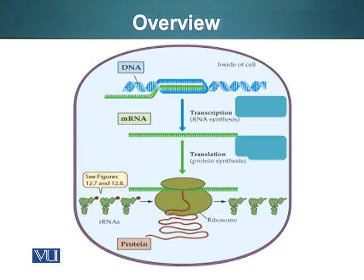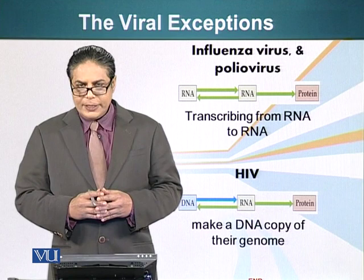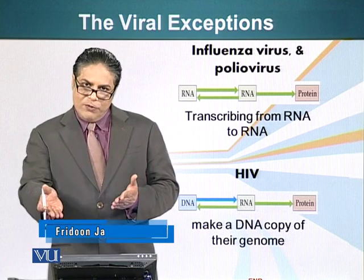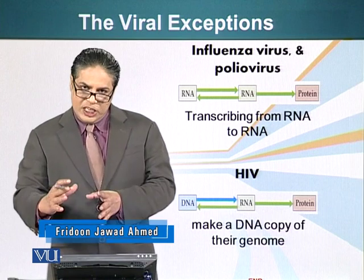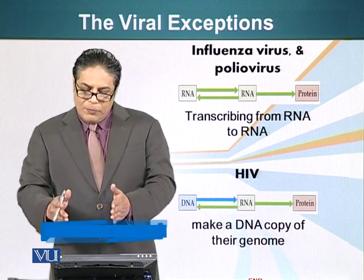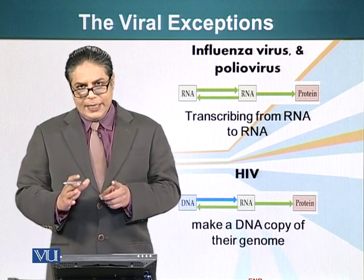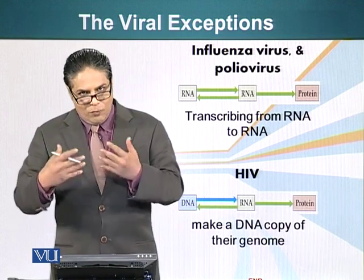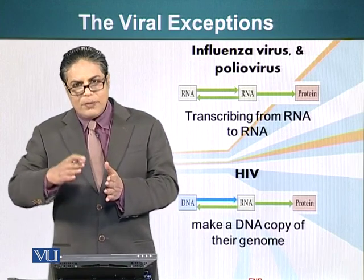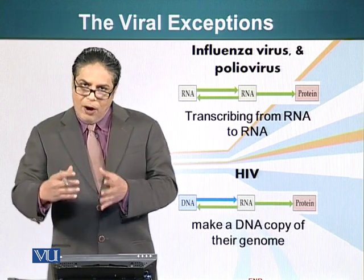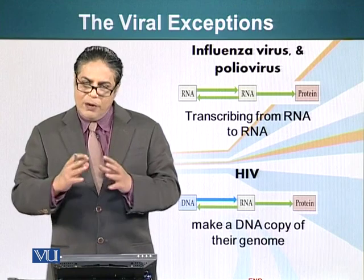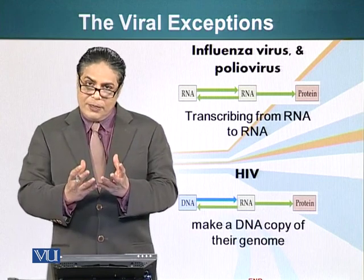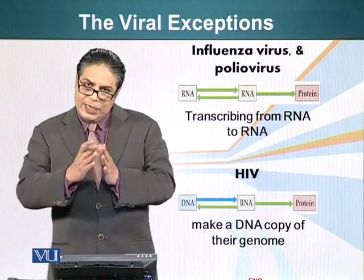It is pertinent to mention the exceptions to the central dogma. There are viruses that are exceptions to the rule of DNA containing information, that information getting converted into RNA and ultimately being translated into protein. For example, influenza and poliovirus — their genetic material is not DNA, it is an RNA molecule. When these viruses infect a cell, that RNA molecule makes many copies of itself and also makes RNA that can be translated into viral proteins. Viral proteins are required to contain the nucleic acids which carry the genetic information. So viruses, as we know, have proteins and nucleic acids.